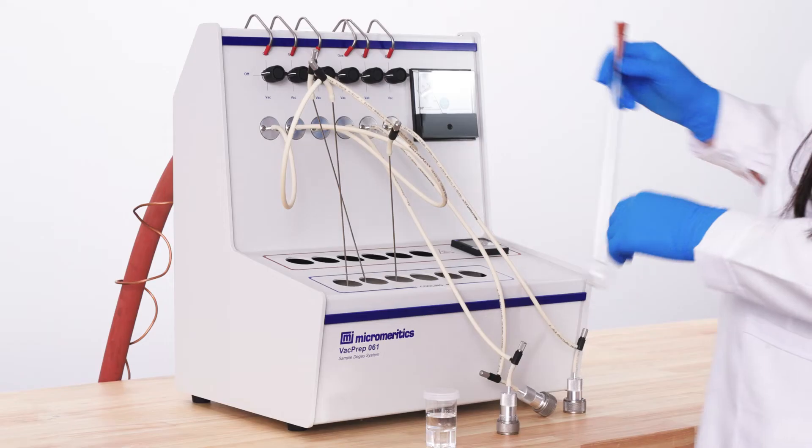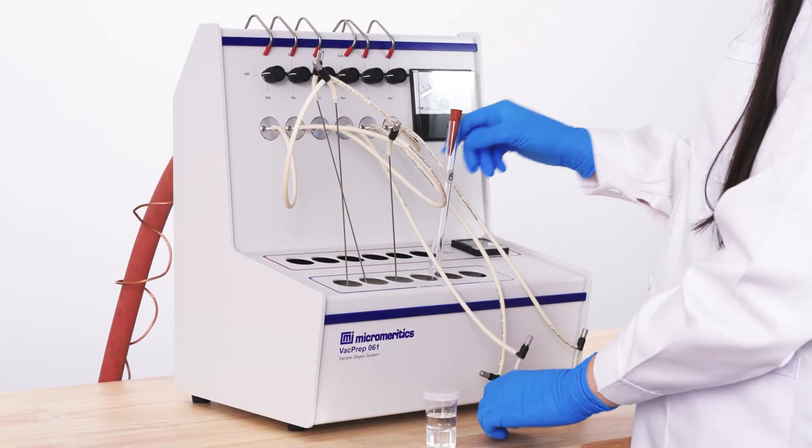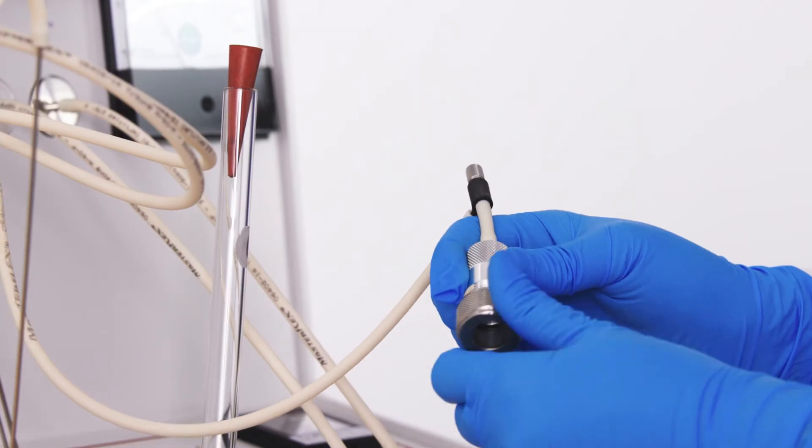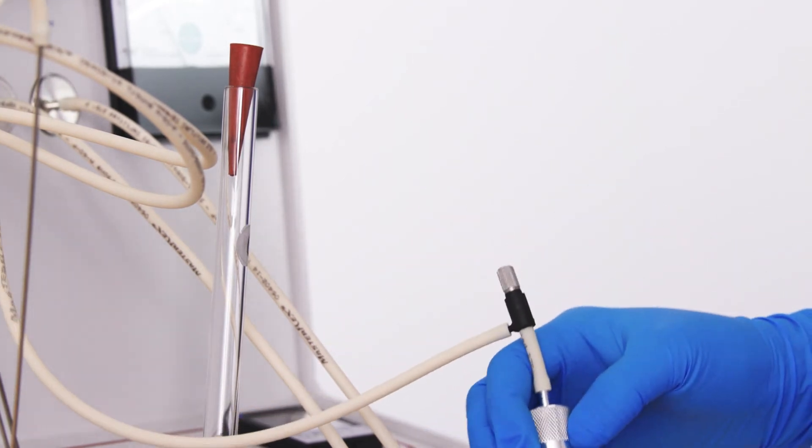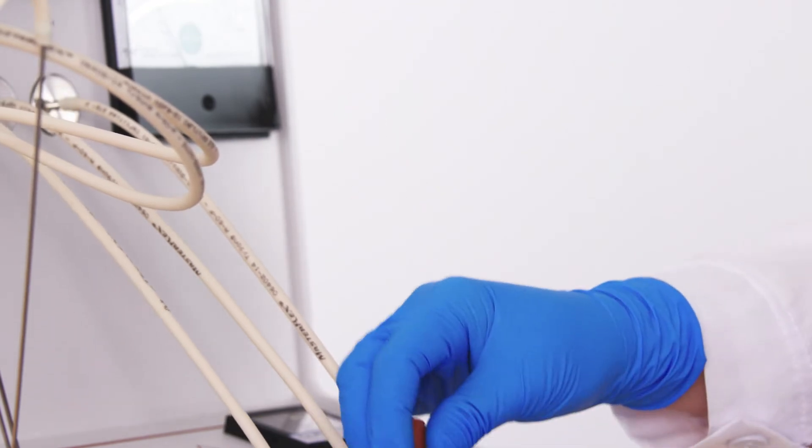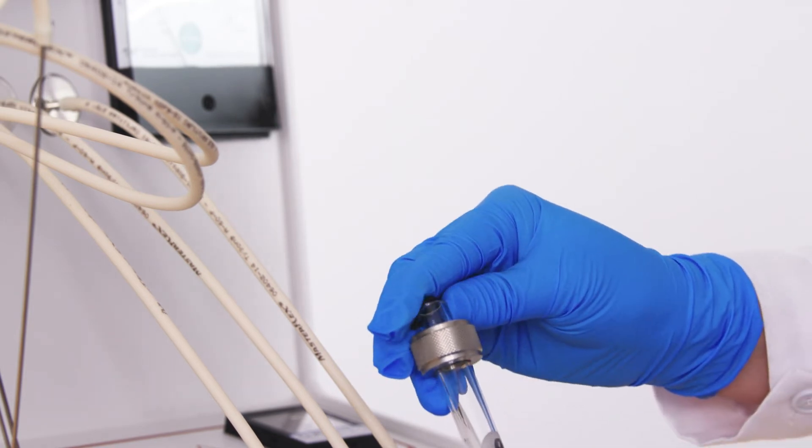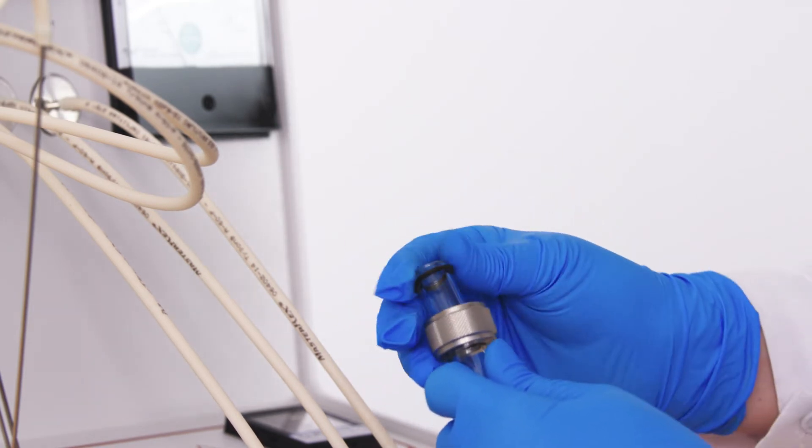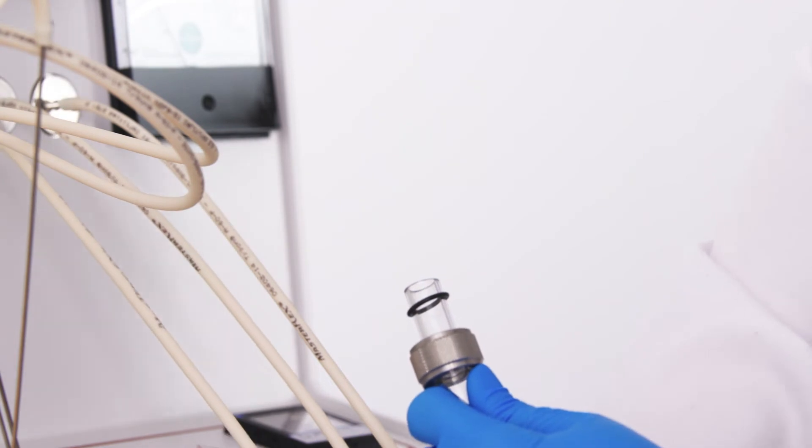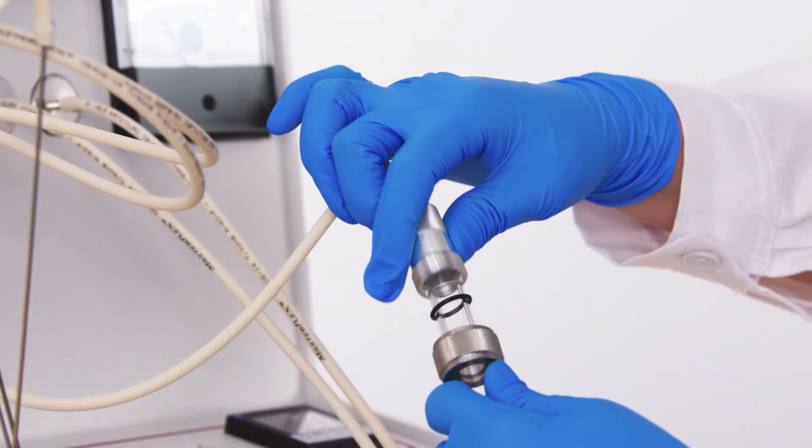To begin, place the sample tube into the cooling station. Unscrew the nut, ferrule, and o-ring from the sample tube mount. Then place the nut assembly onto the sample tube as shown and screw into the sample tube mount.